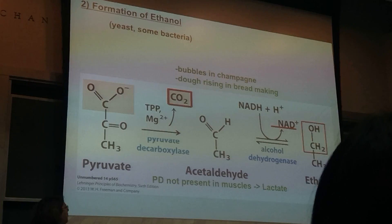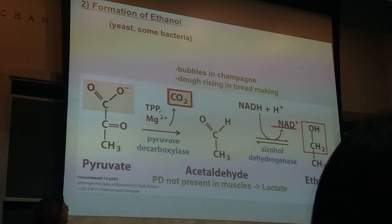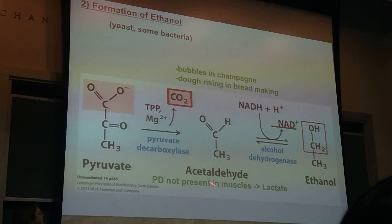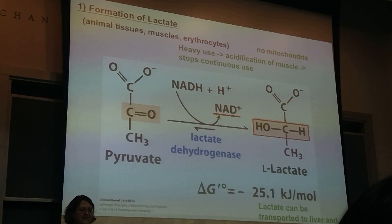One more point: pyruvate decarboxylase — I'll just call it PD — is not present in muscles. So when you're going to either ethanol or going to lactate, usually these are happening in different cells. This is not present in muscles, and in muscles you get lactate — but we'll look at that now.